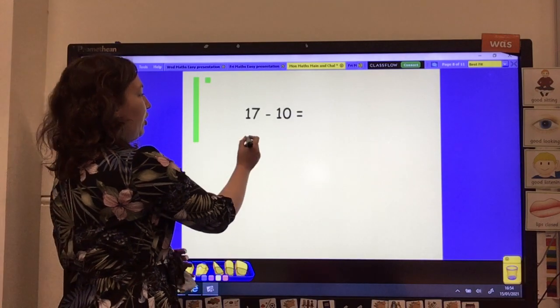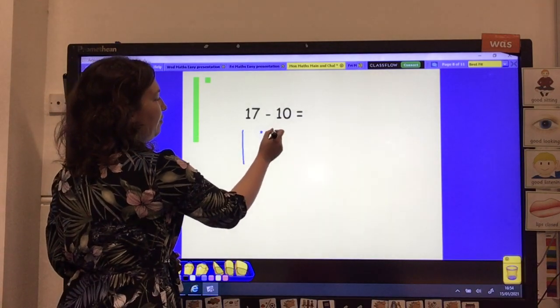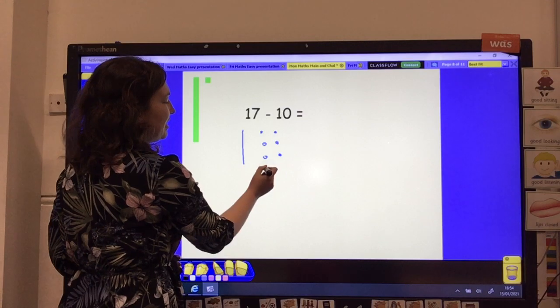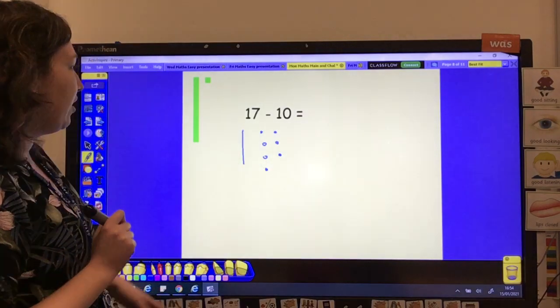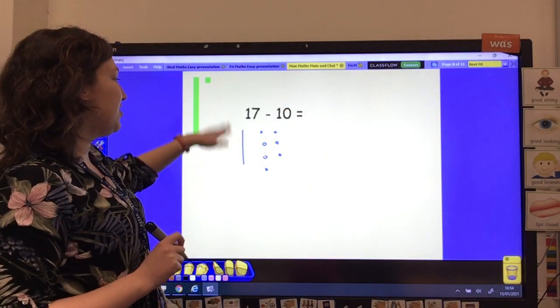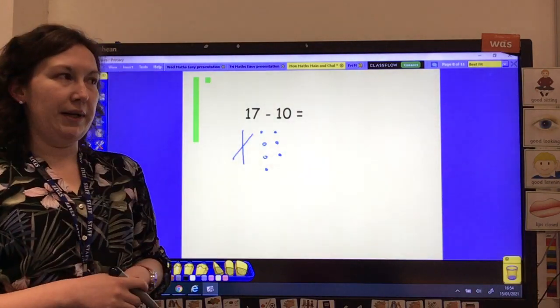Right, let's have a look. So we've got 10, 11, 12, 13, 14, 15, 16, 17. And we're going to take away 10. Now there's only one 10 this time. So we get rid of it completely.